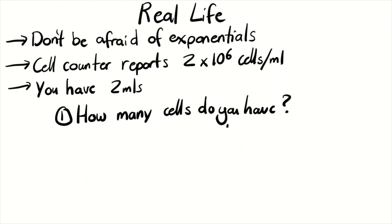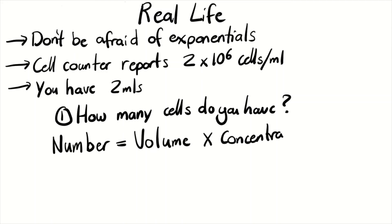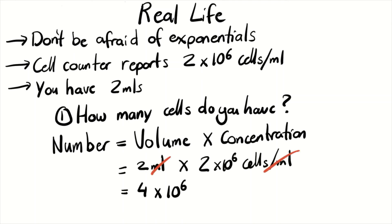Let's look at the first question. It's asking for a number — how many cells do you have? This is the volume you have multiplied by the concentration you have: 2 mils × 2 × 10⁶ cells per mil. The mils cancel out, leaving 2 × 2 × 10⁶ cells, which equals 4 × 10⁶ cells. That's how many cells you have in total.